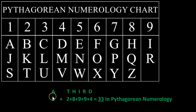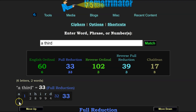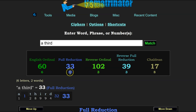For example, with Pythagorean, the values for 'a third' are 1, 2, 8, 9, 9, 4 — the same in full reduction.